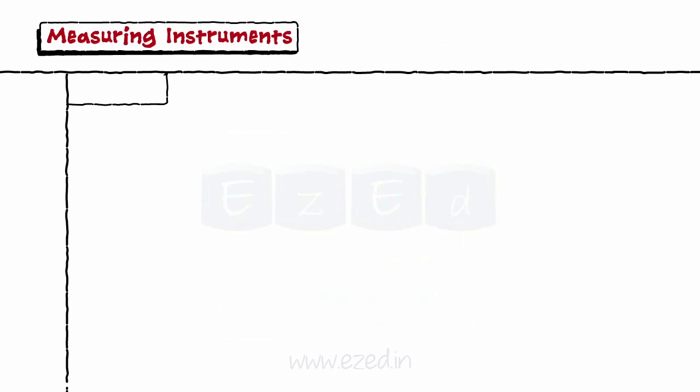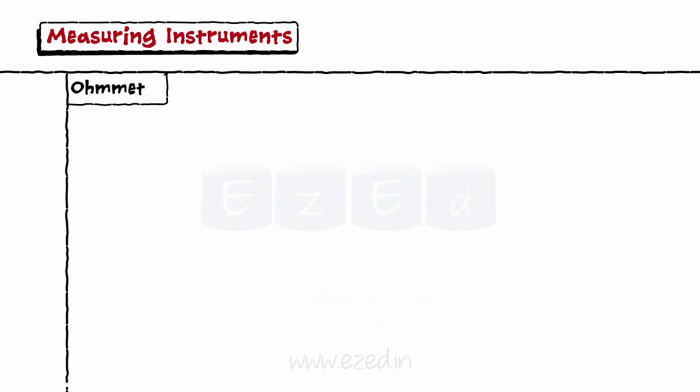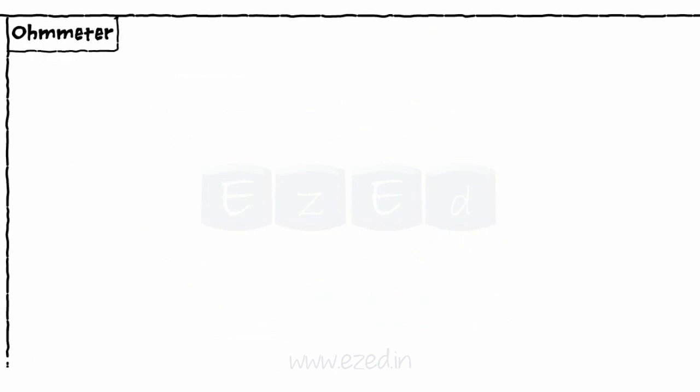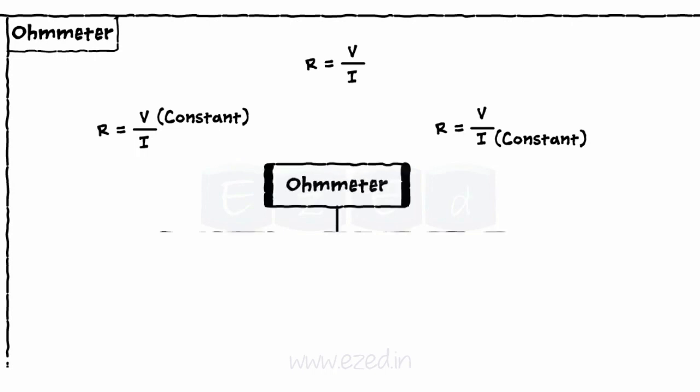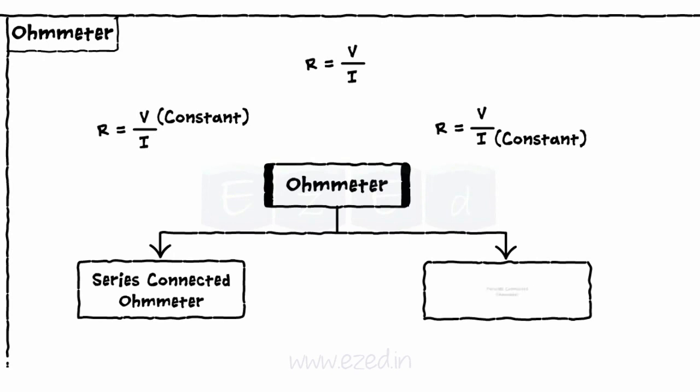The next meter we study is an ohmmeter used to measure resistance. According to Ohm's law, R is equal to V upon I. Thus, by keeping one parameter constant and varying the other, resistance can be found out. Hence, we have two types of meters, one connected in series and the second connected in parallel.